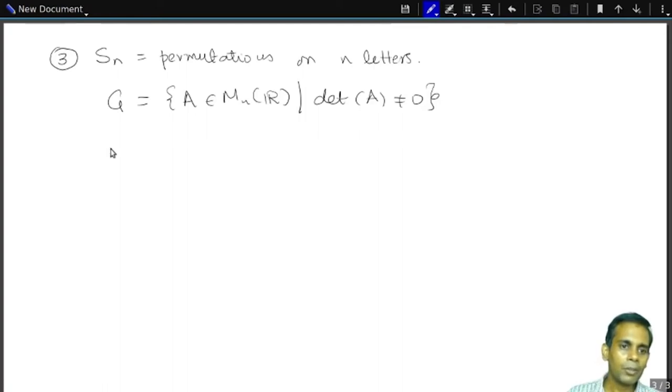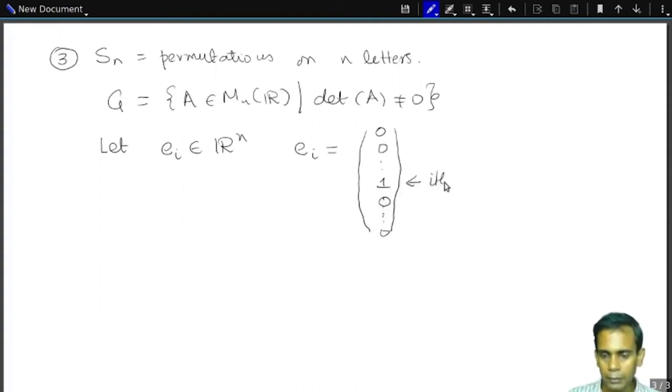And I'm going to define it the following way. So let E_I in R^n be the vector given by 0, 0, 0 everywhere except for a 1 in the ith row. So E_1, E_2, E_3, these are all basis vectors for R^n. If you think of them as column vectors.